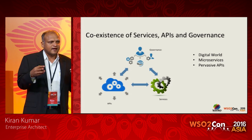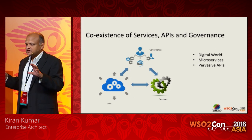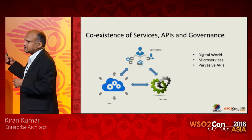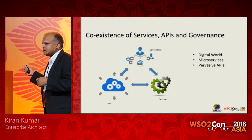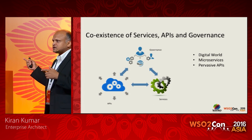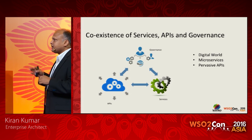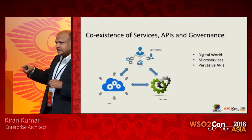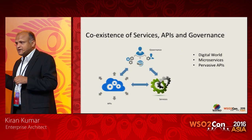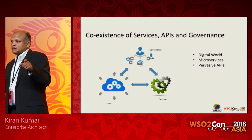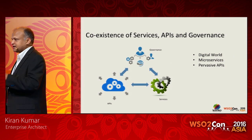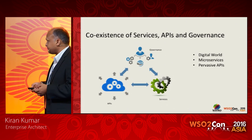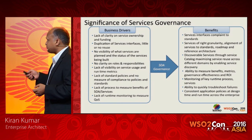By trend, traditional software services are getting split into multiple microservices. If you have X number of services today, it might go to X plus delta X number of microservices going forward. That means more moving parts, and it means more governance is required. And pervasive APIs — we just spoke about that.